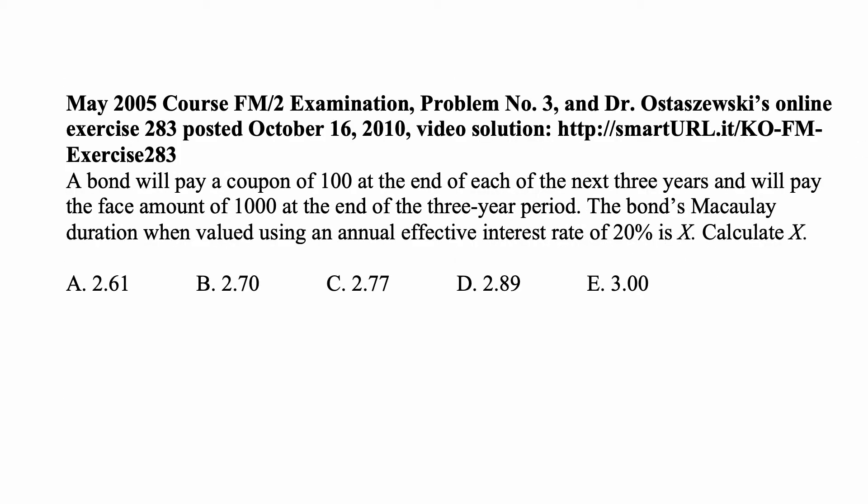Here's a problem for today for exam FM on financial mathematics. A bond will pay a coupon of 100 at the end of each of the next three years and will pay the face amount of $1,000 at the end of the three-year period. The bond's Macaulay duration, when valued using an annual effective interest rate of 20%, is X. Calculate X.